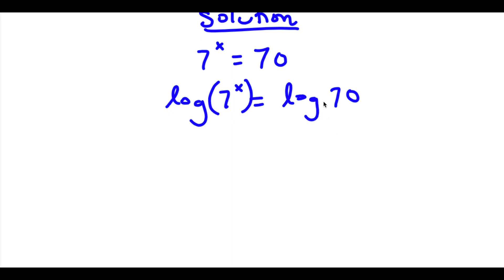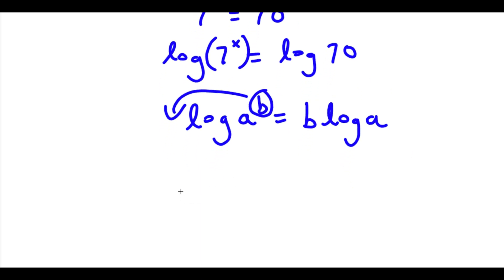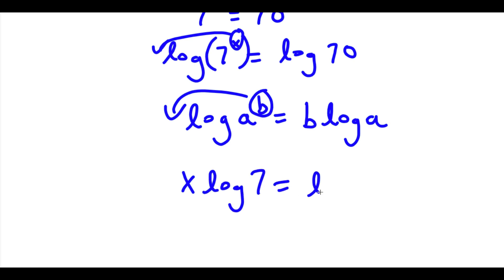Now an important property of logarithms is that if I have something in the form log a to the power of b, I can actually move this exponent b to the front of the logarithm, so this would equal b times log a. The reason why this property is so important is because x here is an exponent and we want to solve for its value. Solving for the value of an exponent is really hard, especially since we know our exponent is going to be a decimal or fraction. So now if we use this property, x is going to turn into a term and not an exponent, and that's why this property is so useful. So I can move this exponent x to the front, giving me x times log 7 is equal to log 70.